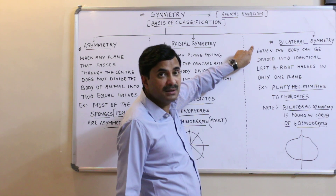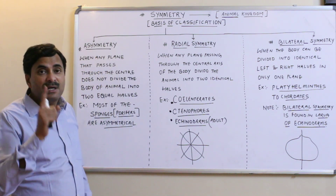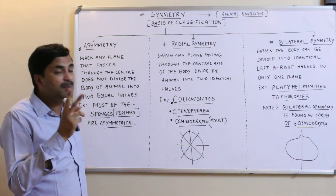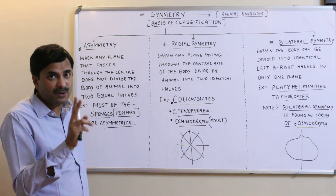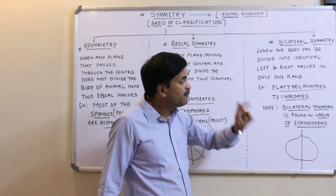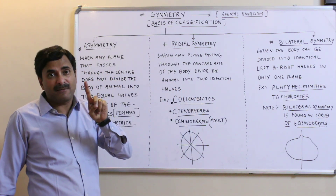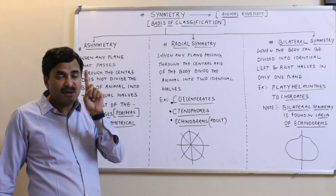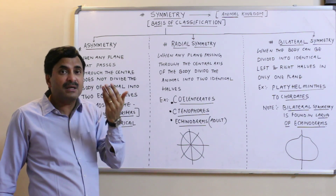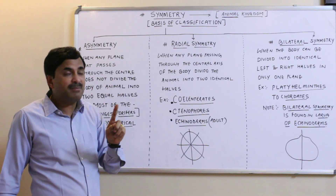The last type of symmetry is bilateral symmetry. When the body of the animal can be divided into identical left and right halves in only one plane — generally the vertical plane — then the symmetry is called bilateral symmetry. Only one plane can cut the organism into two equal halves; any other plane will not give two equal halves.